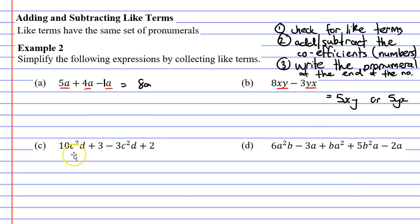Now when we get to question C we're faced with a bit of a problem here. They're not all like terms. So here we have a set of pronumerals c²d and we have c²d over here as well. So we'll just focus on the two terms that are like terms at the moment and we'll look at their coefficients.